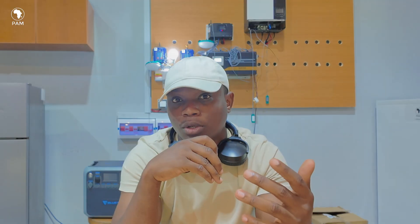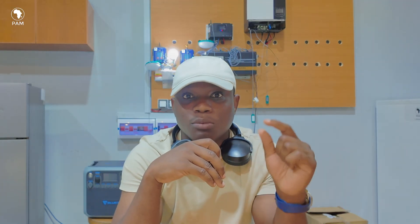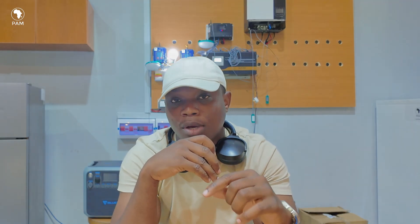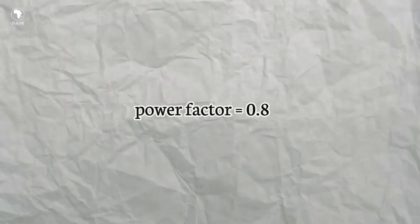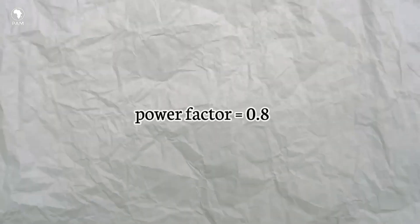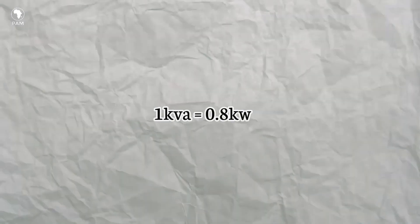Imagine you've got a powerful muscle — that's your kVA — but not all the energy is doing useful work. That's where kilowatt comes in. The difference comes down to something called the power factor, basically how efficient the system is. In Nigeria, we often assume a power factor of 0.8, which means 1 kVA equals 0.8 kilowatt.